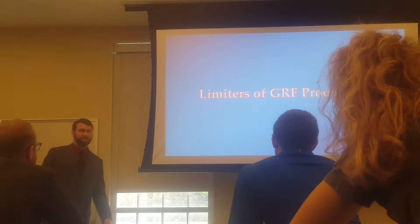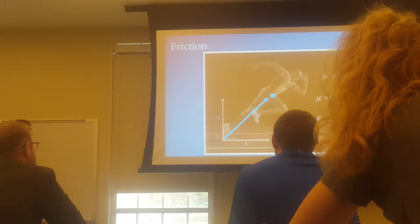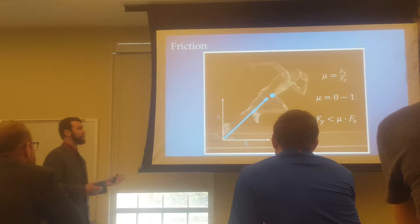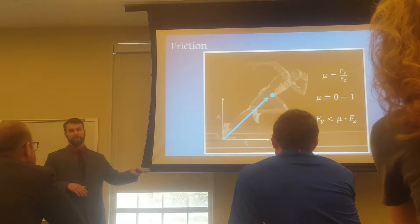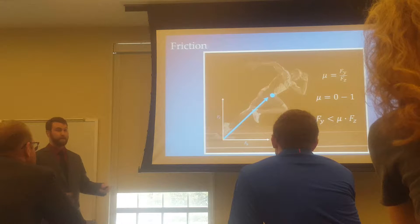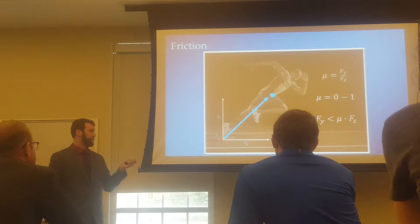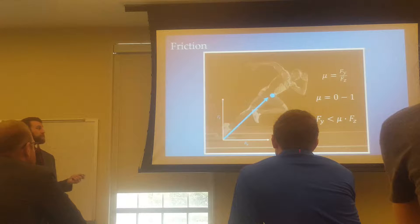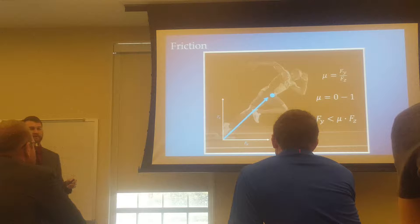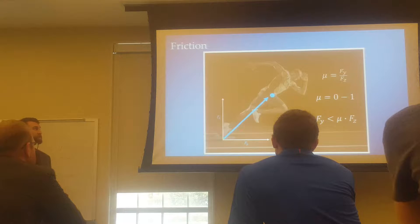So let's talk about the limiters of ground reaction force production during step zero. First is friction. The main takeaway is that if horizontal force production exceeds the friction force, the athlete is going to slip. But if we implement a mechanical interface like track blocks or cleats on turf, the coefficient of friction is going to be one or greater, and therefore horizontal force production is not going to be limited.